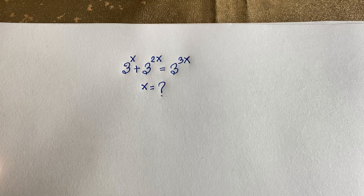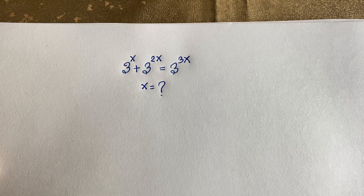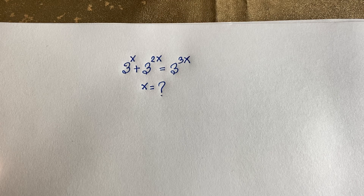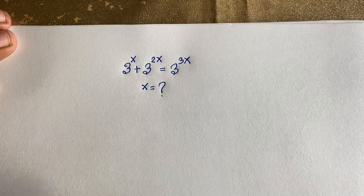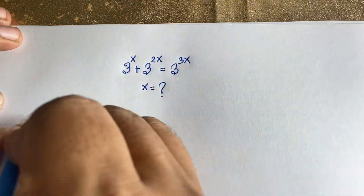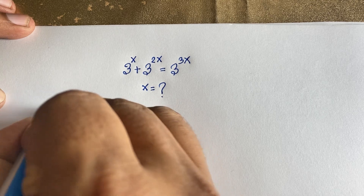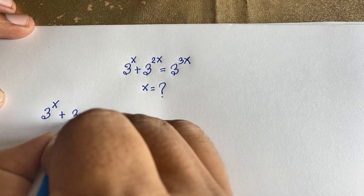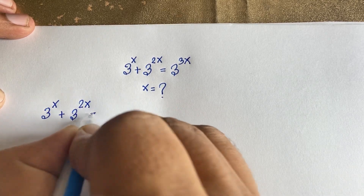Hello everyone. In this video we have solved this interesting Math Olympiad question: 3 to the power x plus 3 to the power twice x is equal to 3 to the power 3x. What is x? Let's see how to solve this question. Our equation is 3 to the power x plus 3 to the power twice x is equal to 3 to the power 3x.